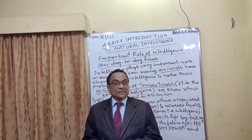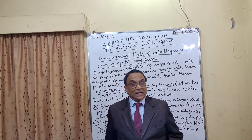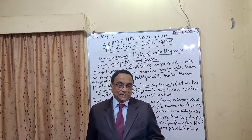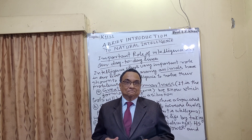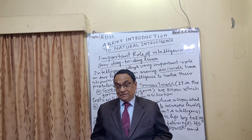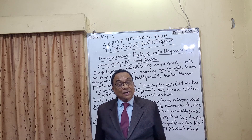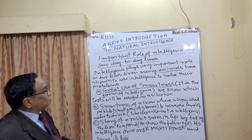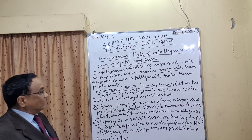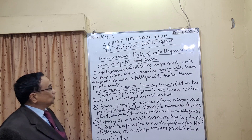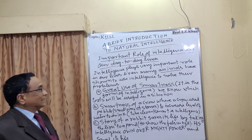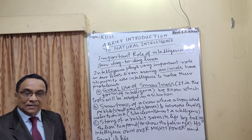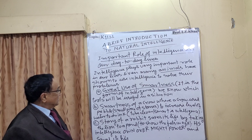Intelligence plays a very important role in our day-to-day lives. Unless we are intelligent and have enough ability to understand, we cannot survive. That is called cleverness and smartness, and it applies to animals as well as human beings. Even many animals have shown use of intelligence to solve their problems. Using smartness — presence of mind, as we call it — is also a form of intelligence.